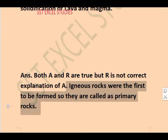Igneous rocks are called primary rocks because they were the first to be formed. Sedimentary and metamorphic rocks are derived from igneous rocks — changes are made from igneous rocks. The reason provided is that igneous rocks were the first to be formed, so they are called primary rocks.